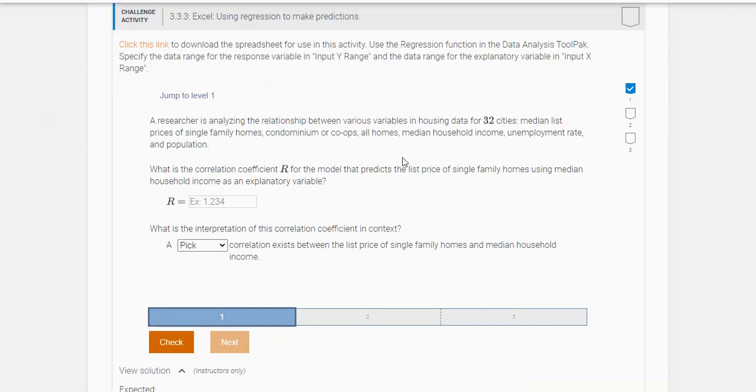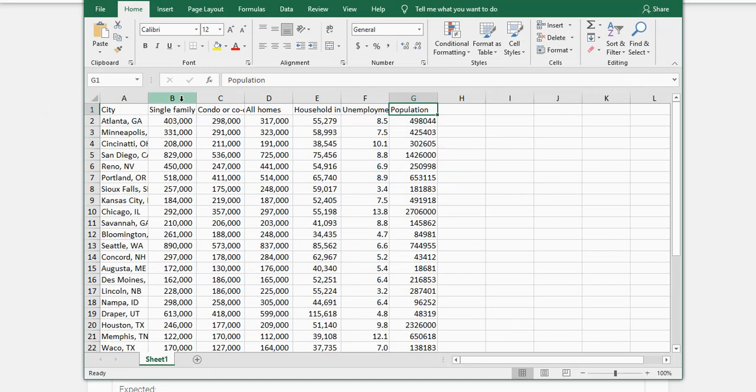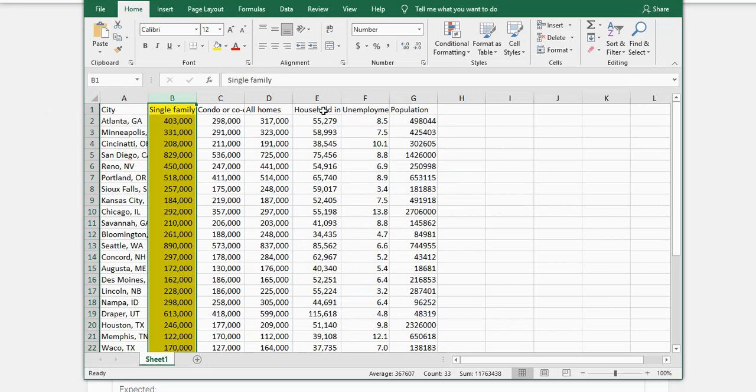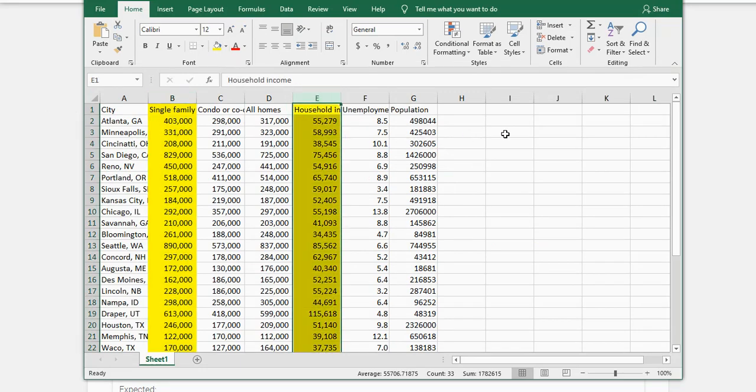We want to predict the selling price of single family homes, so that's this column right here, using median household income as the explanatory variable. That looks like right here. So to find R,